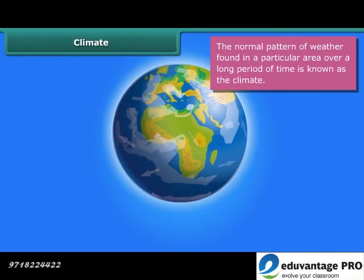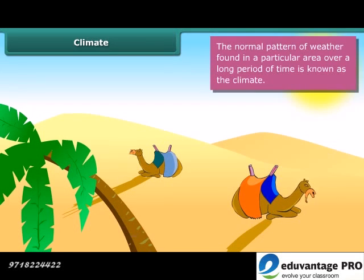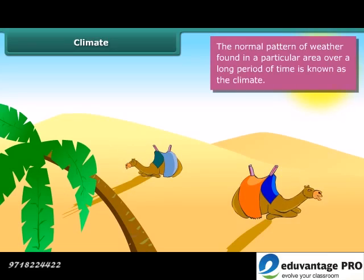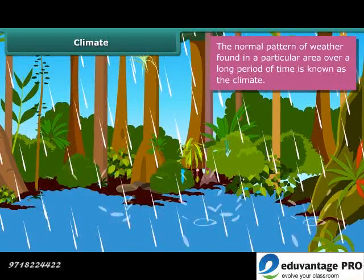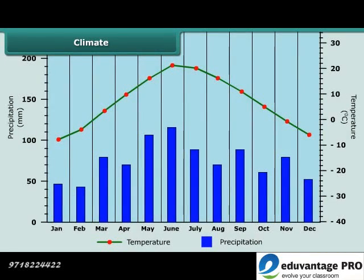Let us know how climate is different from weather. The average weather pattern taken over a long time, say 25 years, is called the climate of the place. If the temperature at a place is high most of the time, it is said to have a hot climate. If it also has heavy rainfall in addition to high temperature, then we say that the climate of that place is hot and wet.